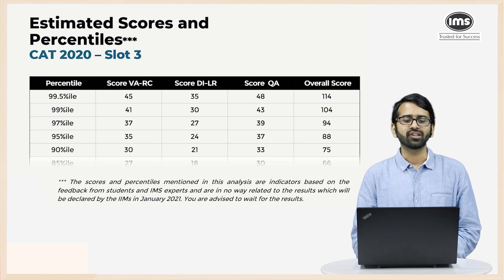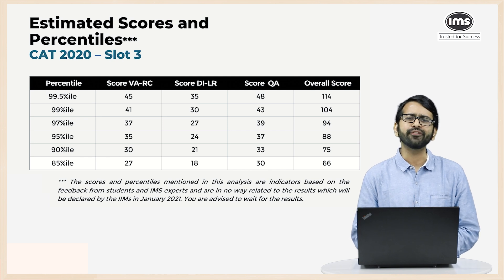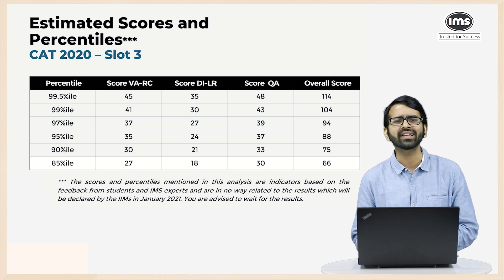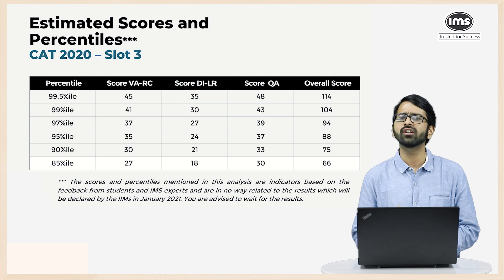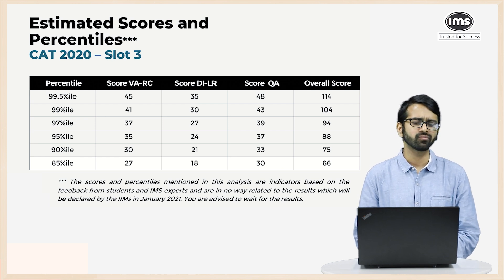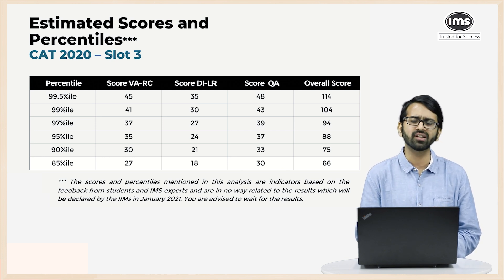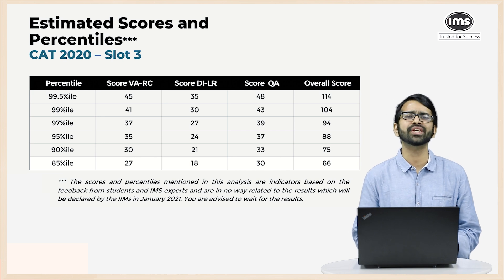Now if we try to estimate the percentiles and the marks, you can see on your screens that overall we feel the 99 percentile level will be for a total of around 104 marks. To get a 99.5 percentile, a score of 114 should get you that. A score of 94 will fetch 97 percentile, 88 will fetch 95 percentile, 75 will fetch 90 percentile, and 66 will fetch 85 percentile.